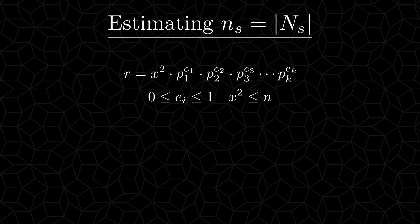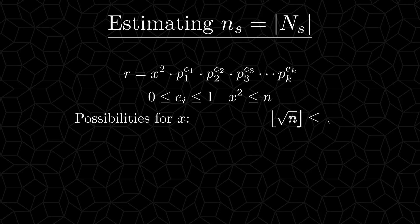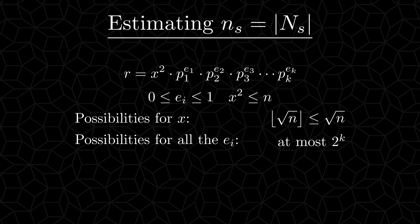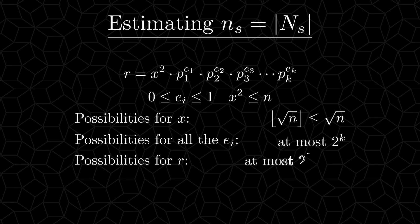And now we can start the combinatorics. How many possible numbers r are there? Well, x squared has to be a square number less than or equal to n. So x has to be a natural number less than or equal to the square root of n. And the exponents are either 0 or 1, and there are k of them. So there can at most be 2 to the power of k possible values for them. So how many possible values can r take? Sure, some combinations of x and ei makes r larger than n, and thus impossible. But clearly, the number of possible r values can't be more than 2 to the power of k times the square root of n. We will keep this in the corner for later.